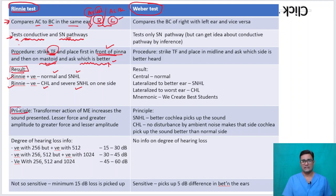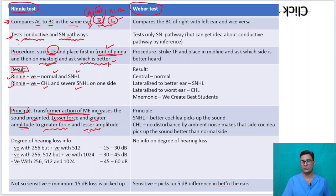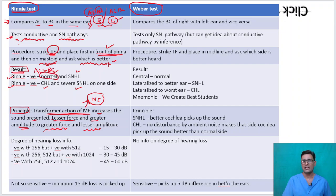To understand this, we must understand the transformer action of the middle ear, which we have discussed in the theory of hearing mechanism. The transformer action increases sound presented to the middle ear — converting sound of lesser force and greater amplitude to greater force and lesser amplitude. Rinne's positive means air conduction is better than bone conduction, seen in normal people because the transformer action is working well, and also in sensorineural hearing loss where the transformer action of the middle ear is still functioning well.